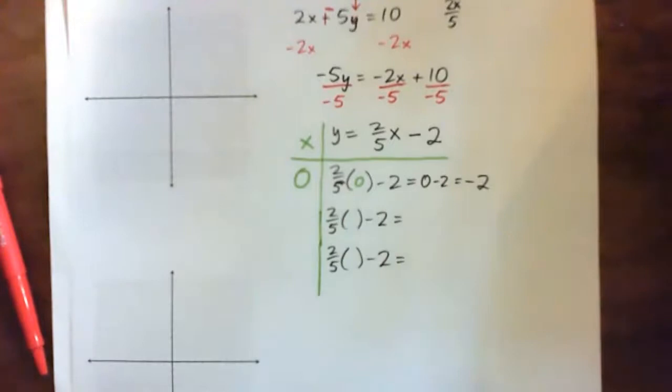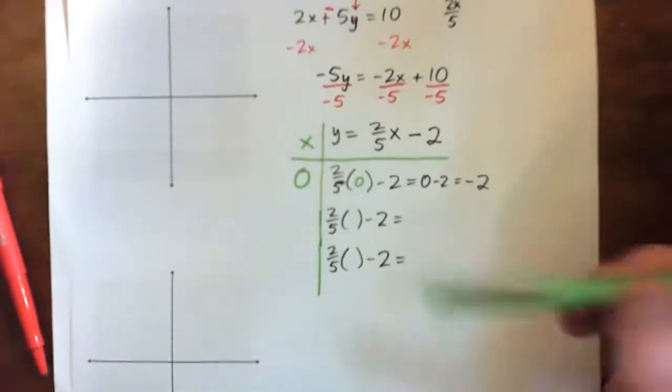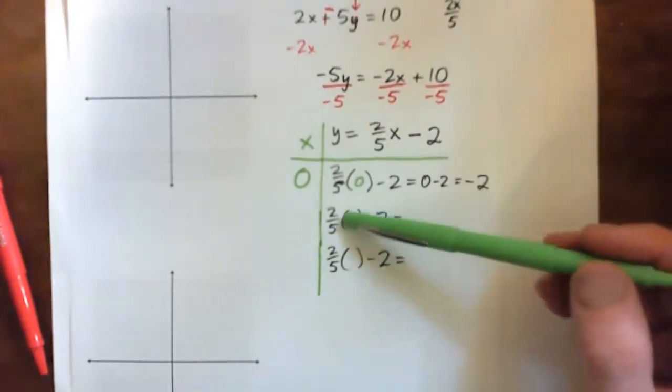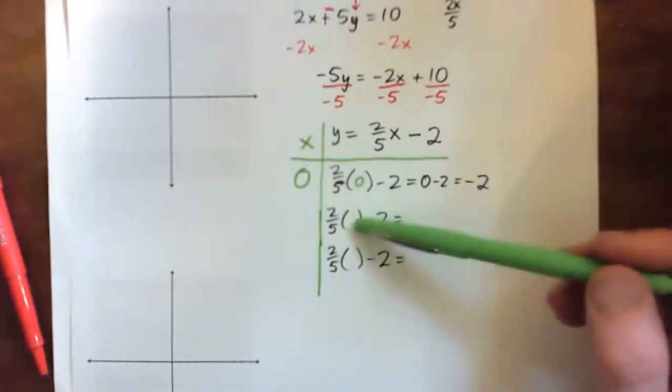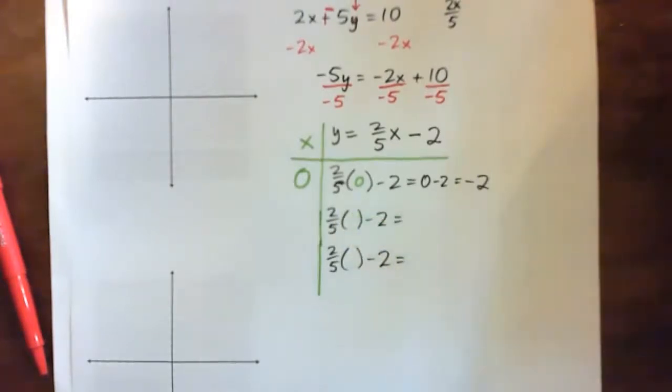So, the trick is, okay, like, what can I plug in so that when I multiply it by fifths, I end up with nice numbers. And the answer kind of is, well, multiples of 5. So, like, 5, 10, 15, negative 5, that type of thing, right?